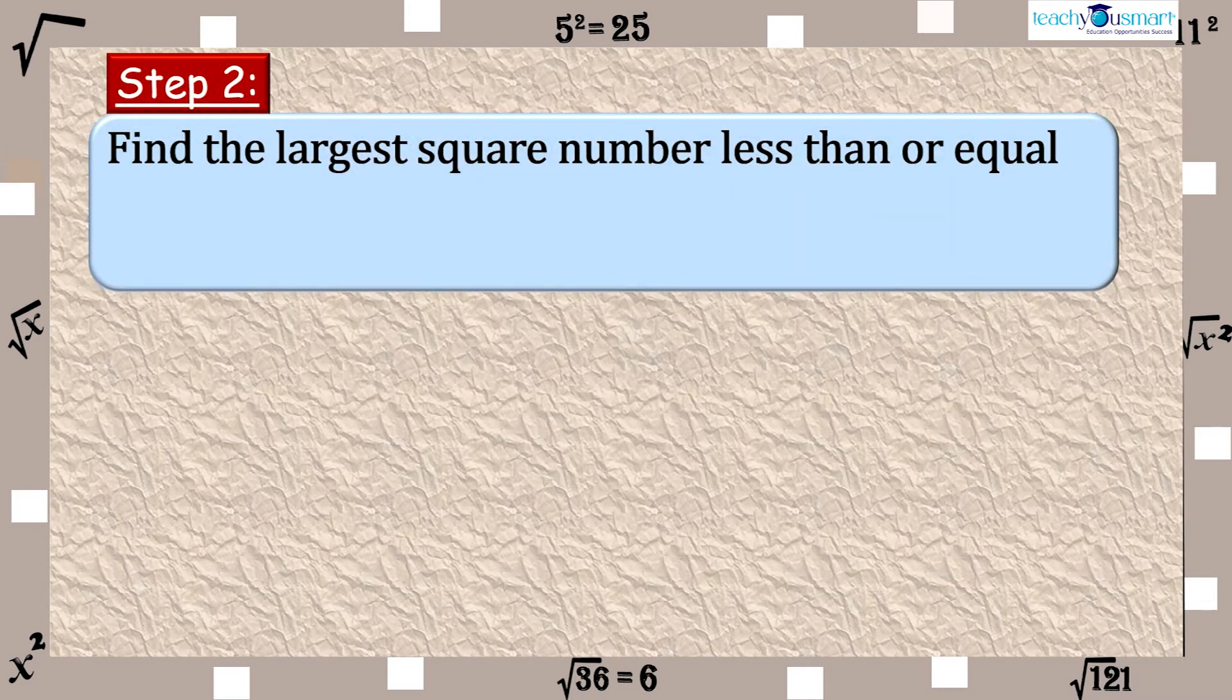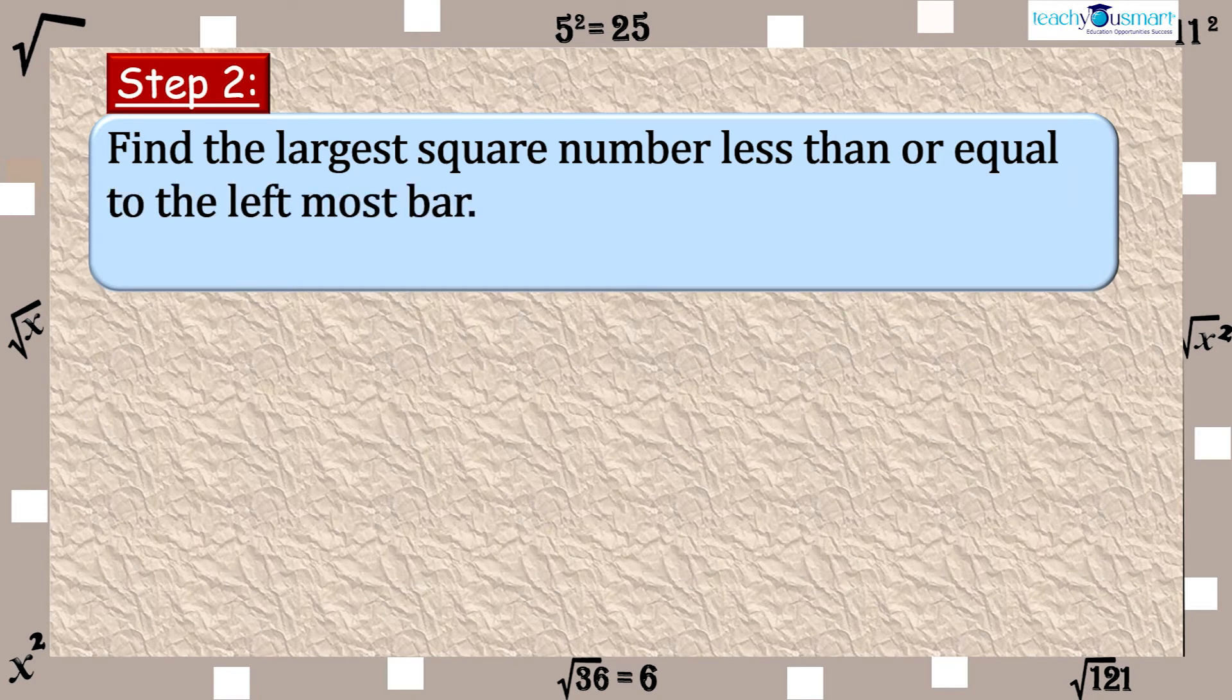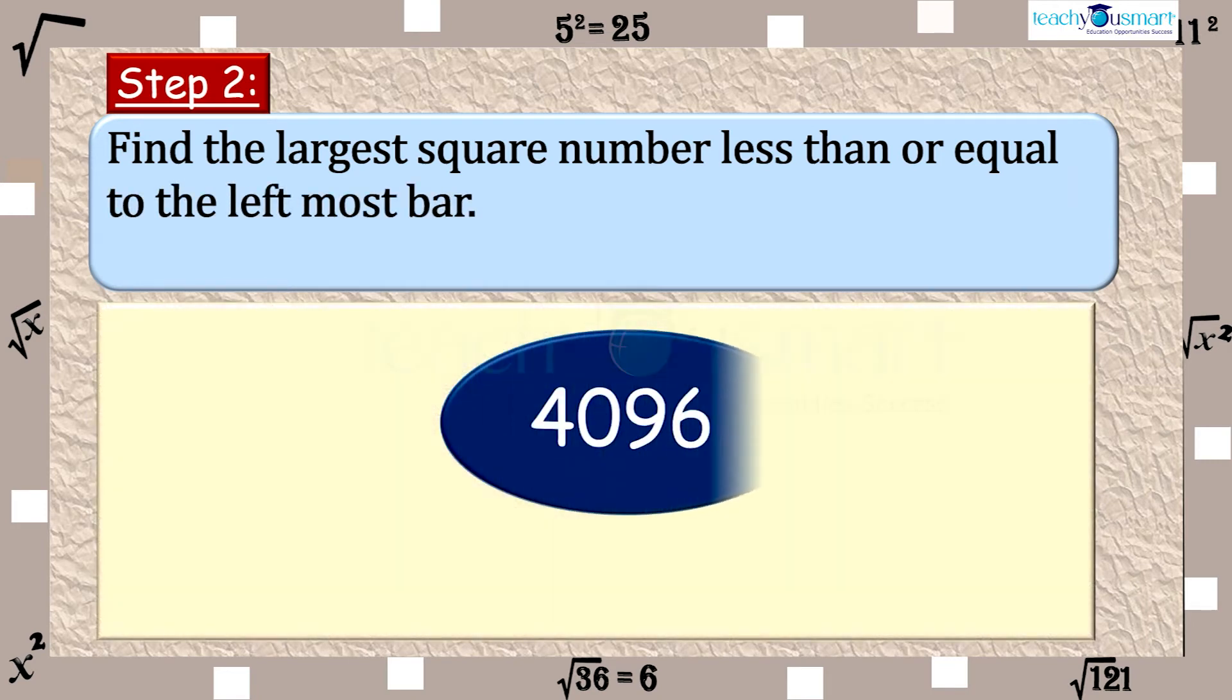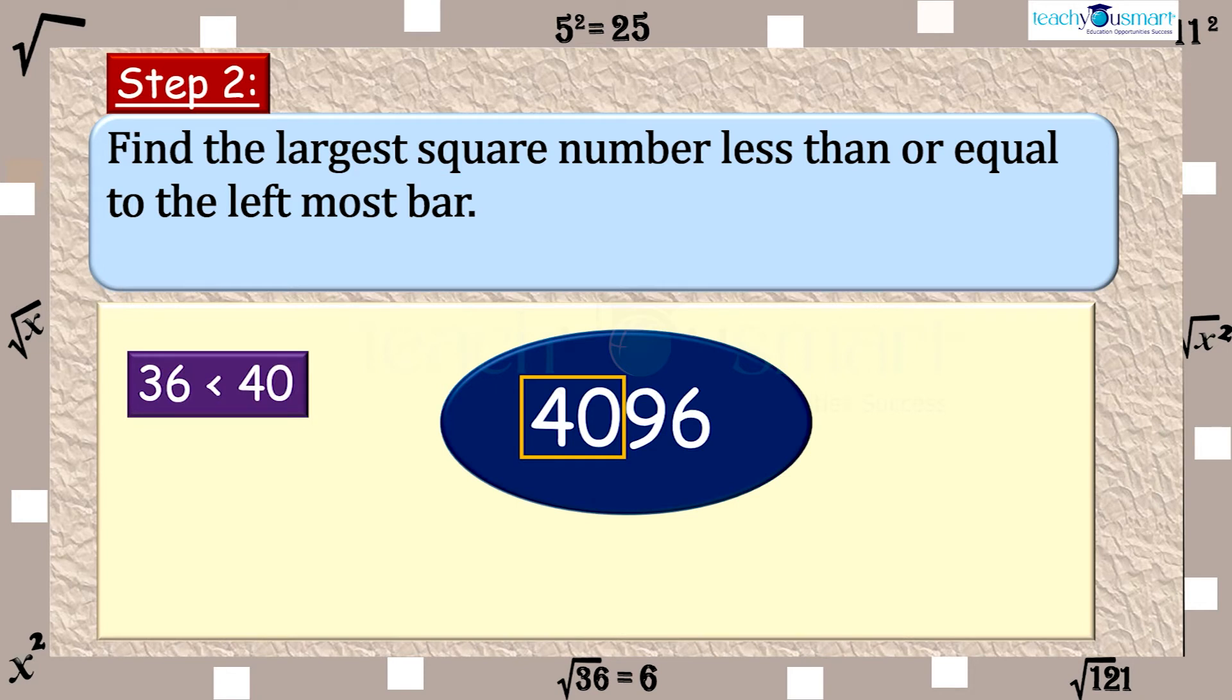Step 2: Find the largest square number less than or equal to the leftmost bar. Here, 36 is the largest square number less than 40. That is, 6 is the largest number whose square is less than 40.